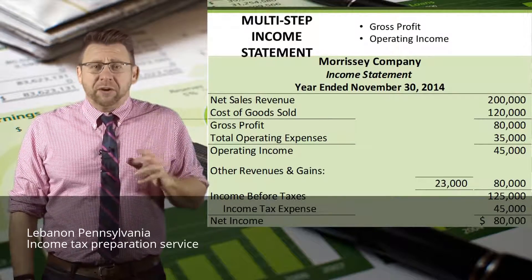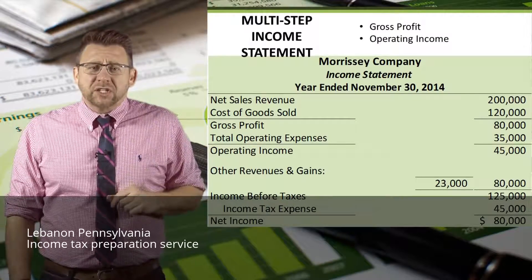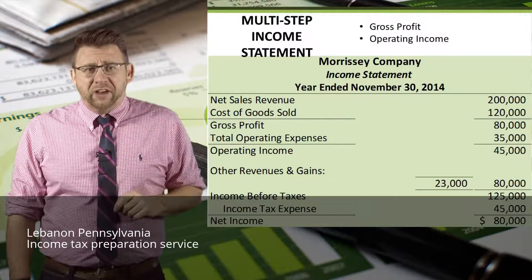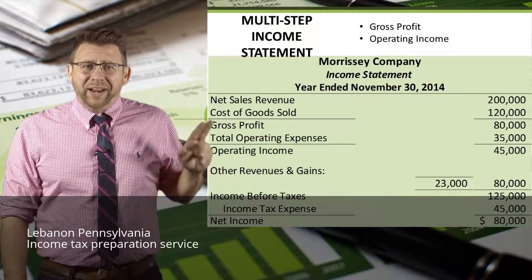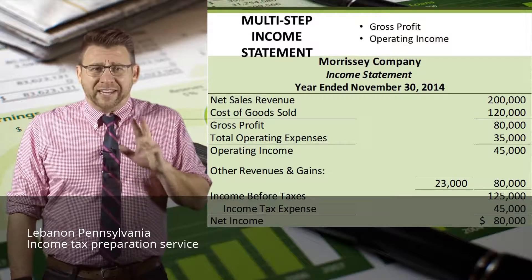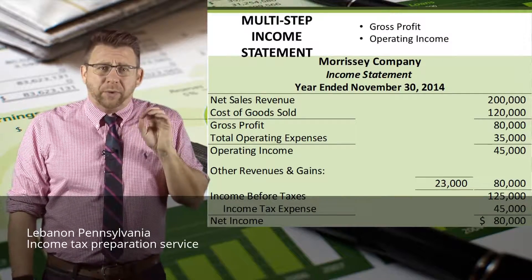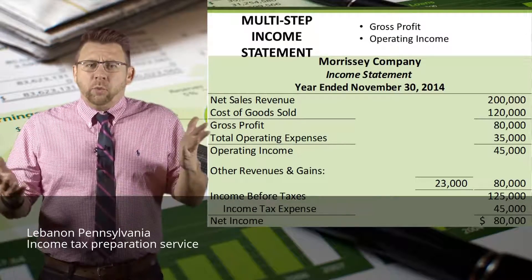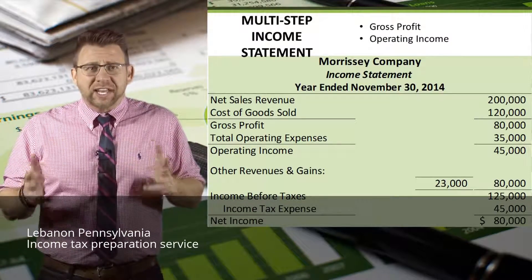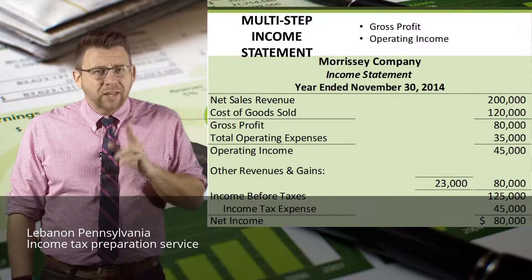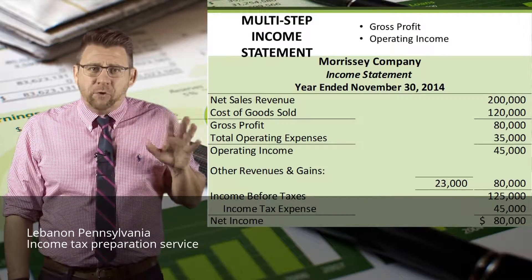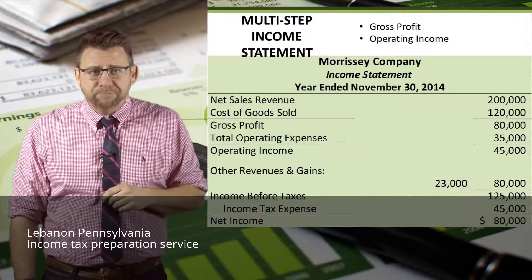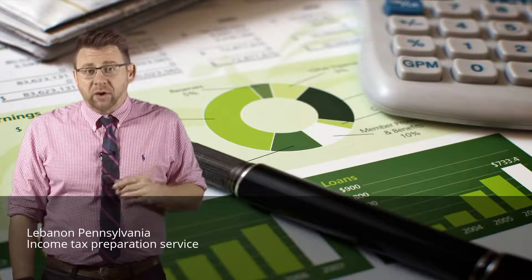The multi-step format gives us better information about gross profit and operating income — that is why non-service firms use this format. Notice that although the company had $80,000 of net income from $200,000 of net sales revenue, operating income was only $45,000. In fact, $80,000 net came from the non-operating section — this company had a $100,000 gain on the sale of land. How repeatable is that? They can't just sell land at a profit each year into perpetuity. That's why the multi-step format breaks out the different types of account data so investors and creditors can make more informed and better decisions. And that concludes this short video on the multi-step income statement.